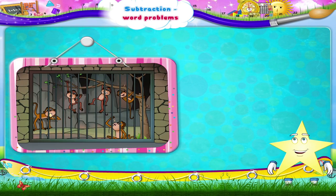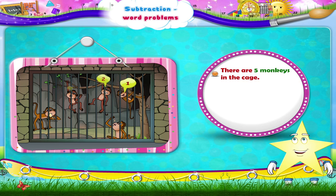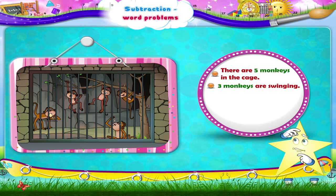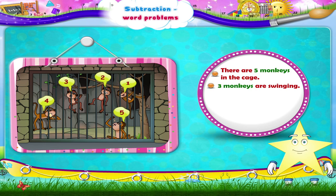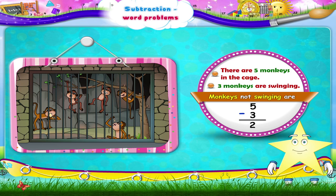Let us first visit the monkeys. There are five monkeys in the cage. Three monkeys are swinging. How many monkeys are not swinging? That's easy! Monkeys in the cage are five, monkeys swinging are three, monkeys not swinging are five minus three, which is two.